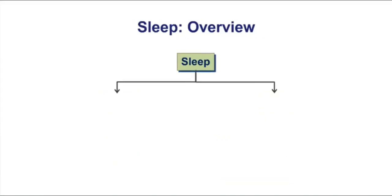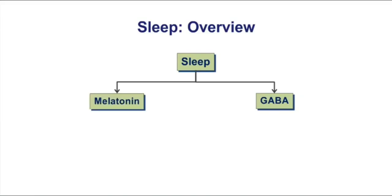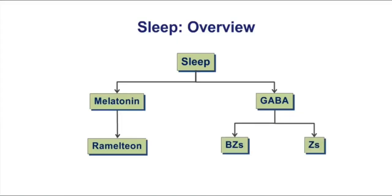The other flow chart is for sleep disorders. Most often we're thinking about GABA drugs for sleep disorders, though occasionally you want to think about melatonin. There's a melatonin derivative called ramelteon that can be used for patients who have trouble sleeping. If we think about the GABA drugs, we really have two choices: benzodiazepines and the Z drugs, including zolpidem and zaleplon. This flow chart should help you organize the drugs in terms of their mechanisms.